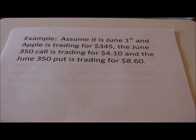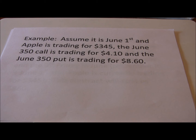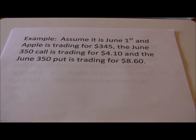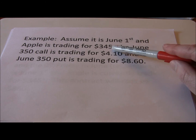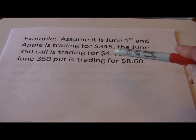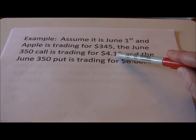In our first video on options, we introduced options, discussed what an option was, and introduced some basic terms like put, call, strike price or exercise price, and the idea of a stock option contract. We're going to continue along that by going into more detail on the put contract in this video. Our example was based on Apple, where we said assume it is June 1st and Apple is currently trading for $345.